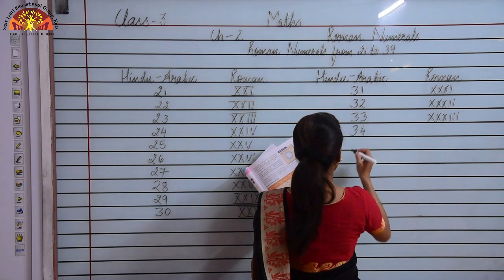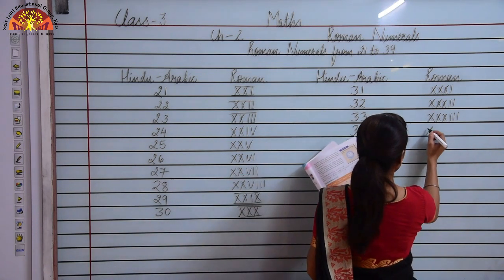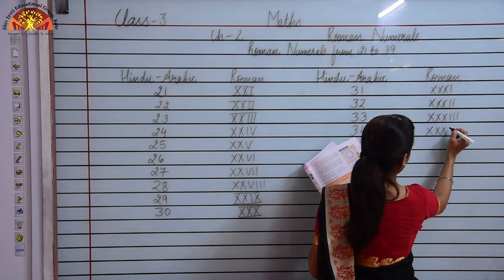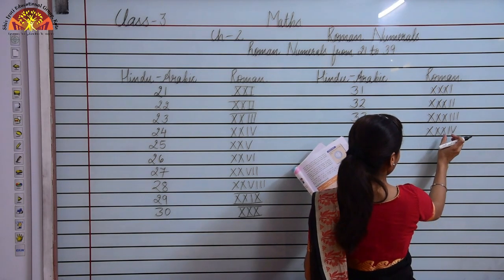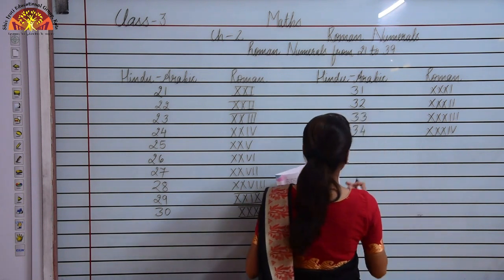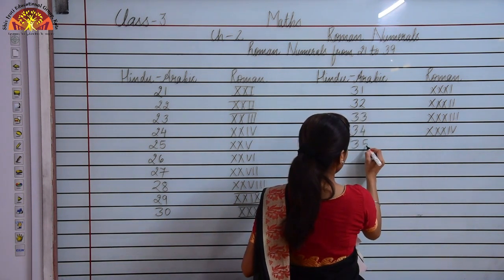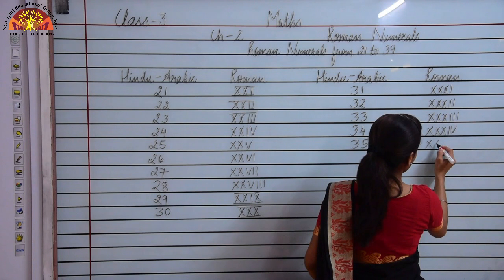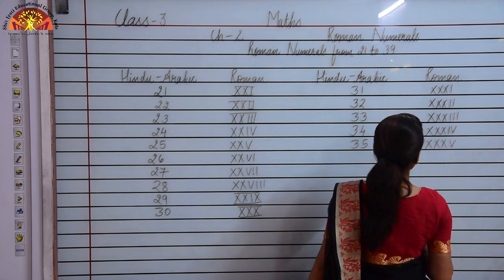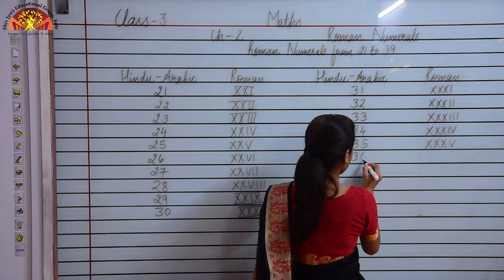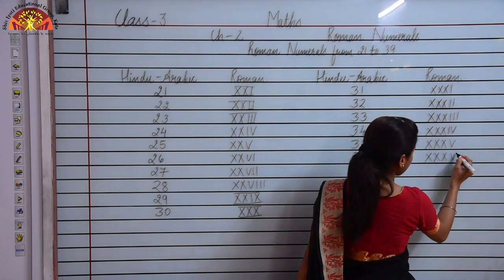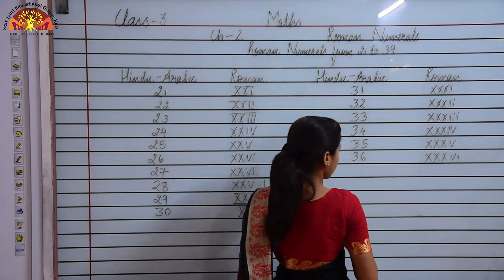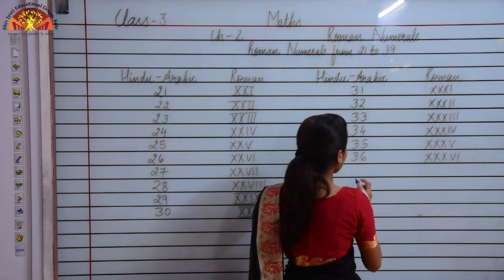To write 34 I will write XXX and then add IV to it, so XXX plus IV is 34. Now to write 35 I will write XXX and then add V to it. To write 36 I will write XXX and then add VI to it — this represents the symbol of 6, so 30 plus 6 will be 36.